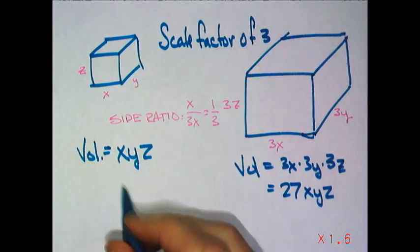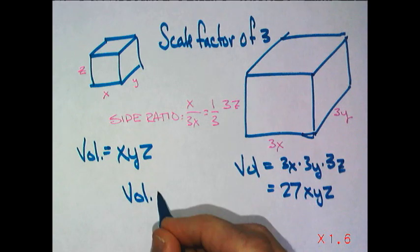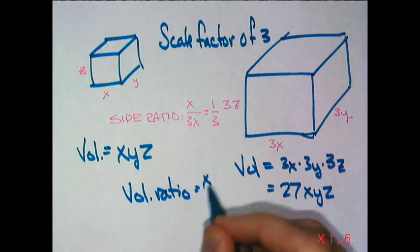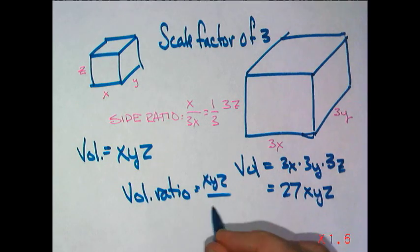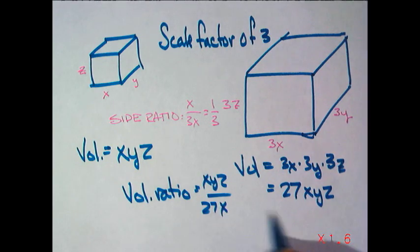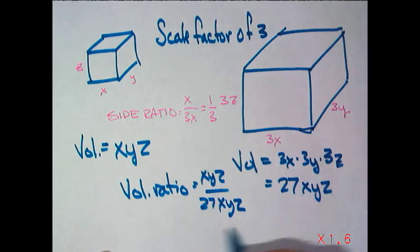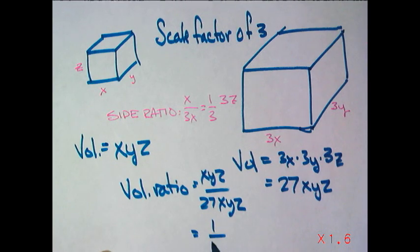And if we compared volume ratio, small to big, it would be xyz compared to 27 xyz. Simplifying, that just simply compares to 1 to 27.